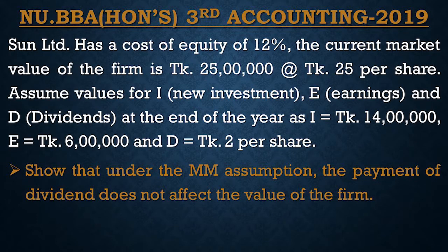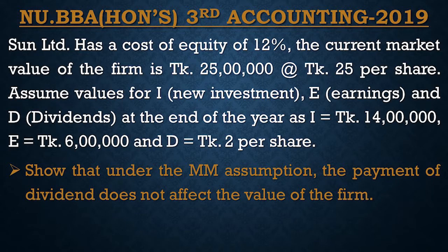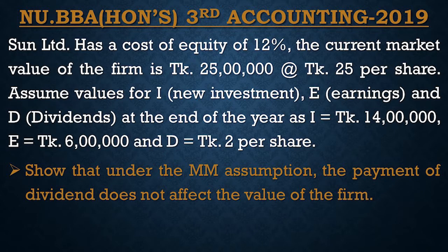Sun Limited has a cost of equity of 12%, which means cost of equity capital KE is 12%. The current market value per share is $25. The company will give $200,000, with earnings for $4,000.